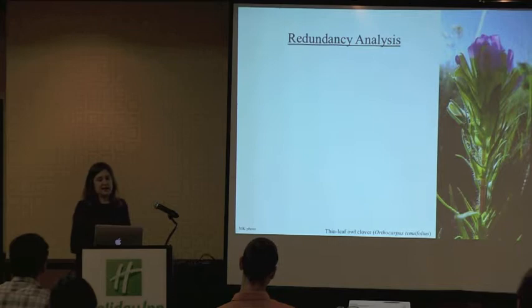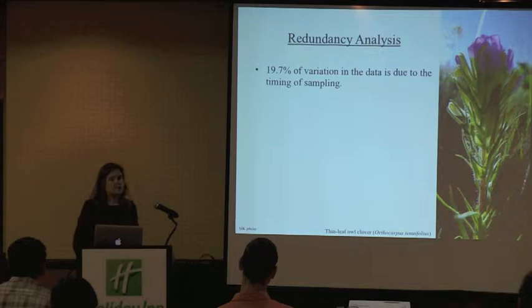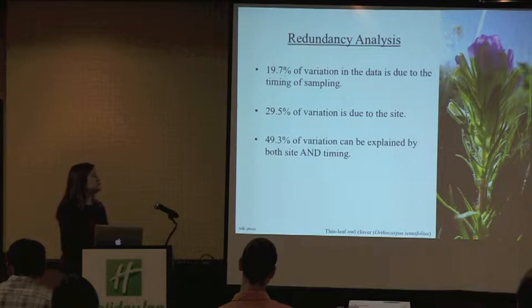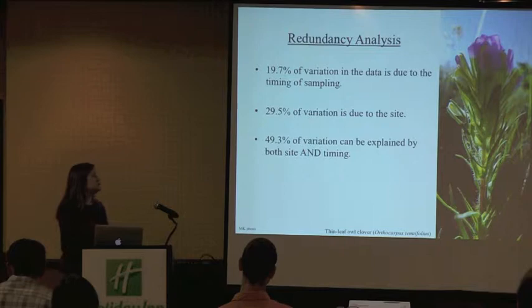In the redundancy analysis of our samples, almost 20% of the variation in our data is due to the timing of sampling — not totally unexpected since bees come out at different times of year. About 30% of the variation is due to the site, and almost 50% can be explained by both site and timing combined. Additionally, 30% of the variation is explained by the vegetation.